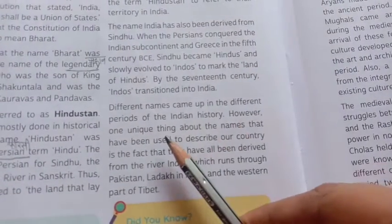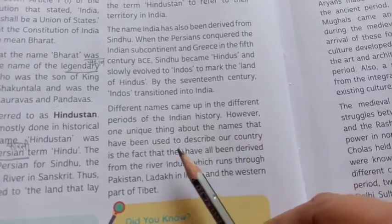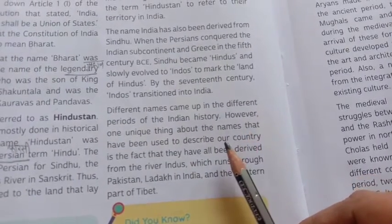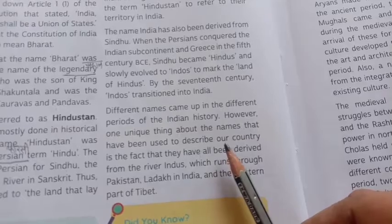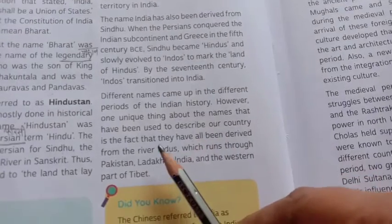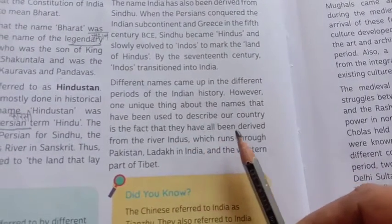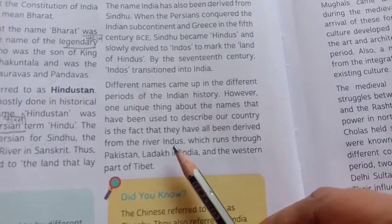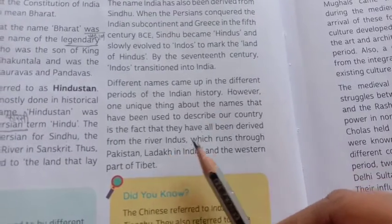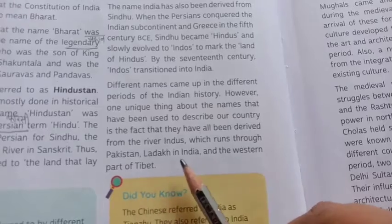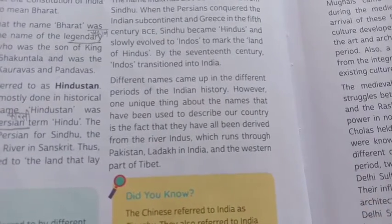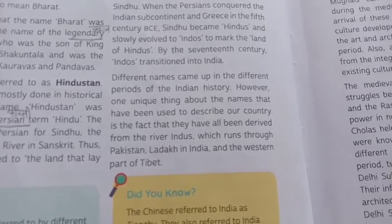One unique thing about the names used to describe our country is the fact that they have all been derived from the river Indus, which runs through Pakistan, Ladakh in India, and the western part of Tibet.